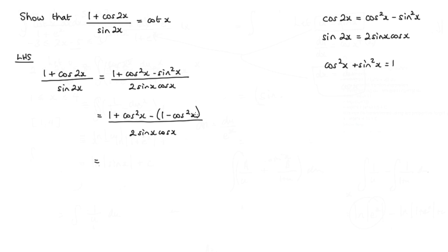Now just by expanding these brackets here, well, I'll have a 1 minus 1, so they'll cancel. I'll have cos squared x and then 2 negatives making a positive. So I'll end it with 2 cos squared x. And that's over 2 sine x cos x. Now obviously the 2s will cancel. And I can cancel this cos x here with one of these. So I'm left with cos x over sine x, which is cot x.